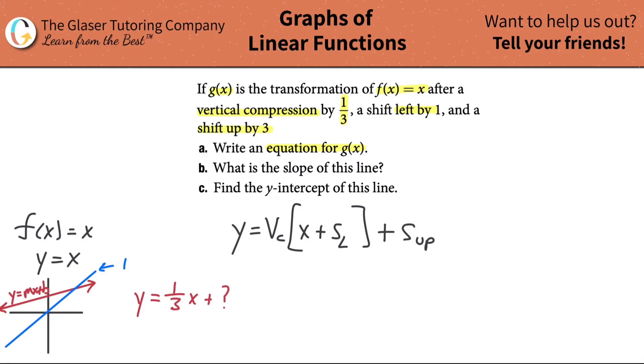So this is shift up. We know going upward on a graph is positive Y, going down is negative Y. If this said shift down by three, then this would have been minus three. Now literally watch, all you have to do is plug it in. So vertical compression is one-third, x plus the shift to the left was one, plus the shift up was three. And this is it. This is actually your equation now.